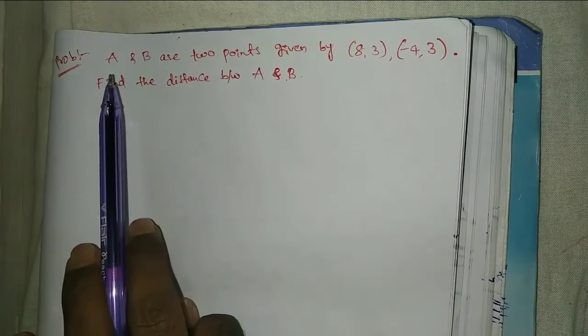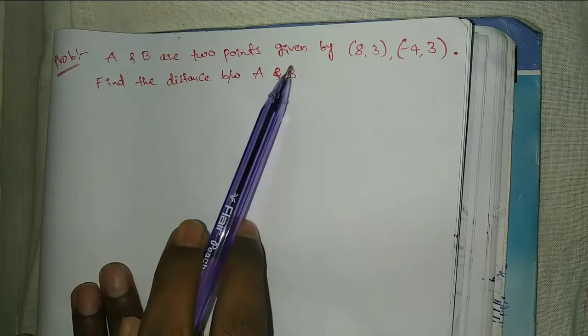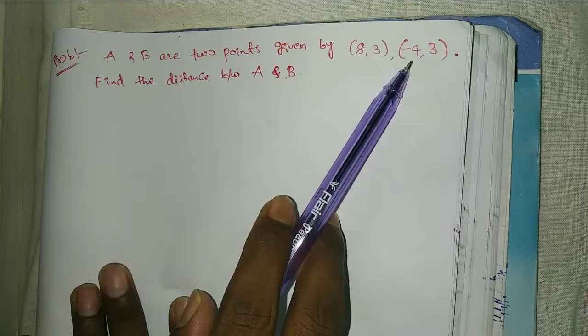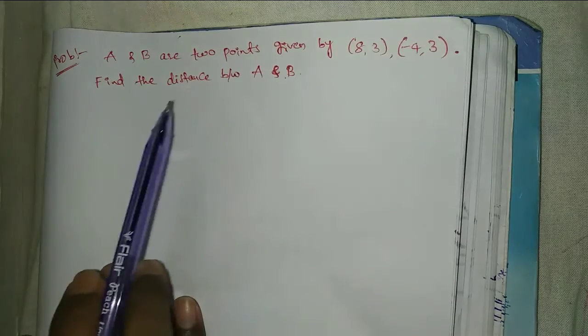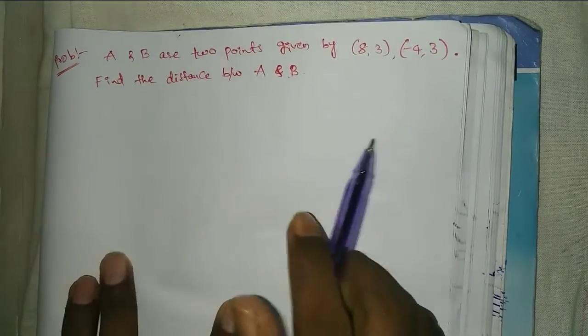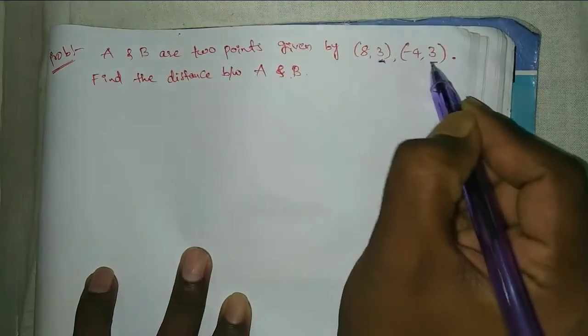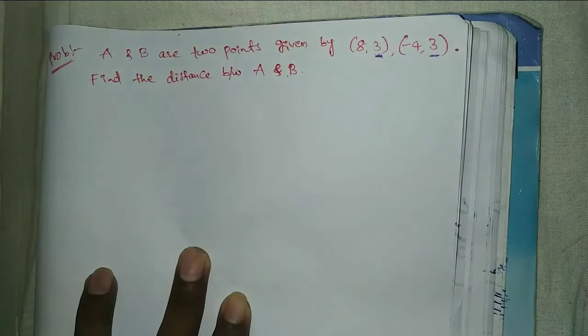See here, next problem. A and B are two points given by (8, 3) and (-4, 3). Find the distance between A and B. See here, the y1 and y2 values are the same.